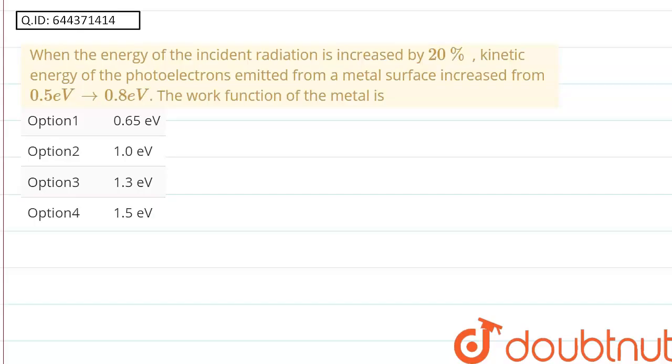Hello friends, the problem is when the energy of incident radiation is increased by 20%, kinetic energy of the photoelectrons emitted from the metal surface increased from 0.5 electron volt to 0.8 electron volt.